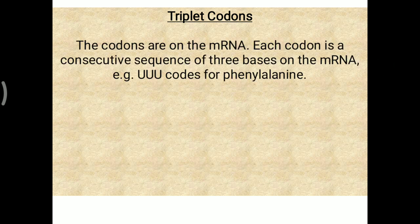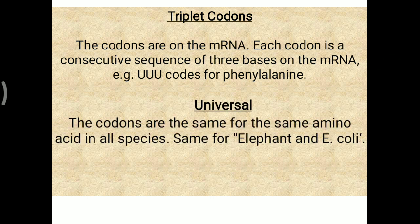Triplet codon: each codon on the mRNA is a consecutive sequence of three nitrogenous bases. For example, UUU codes for phenylalanine. All these genetic codons are universal — meaning the codons are the same for the same amino acid in all species.